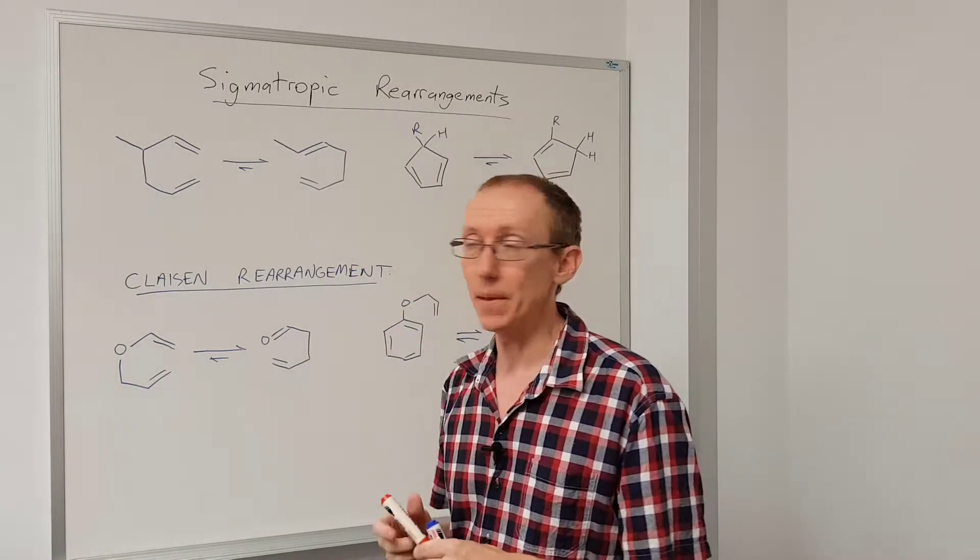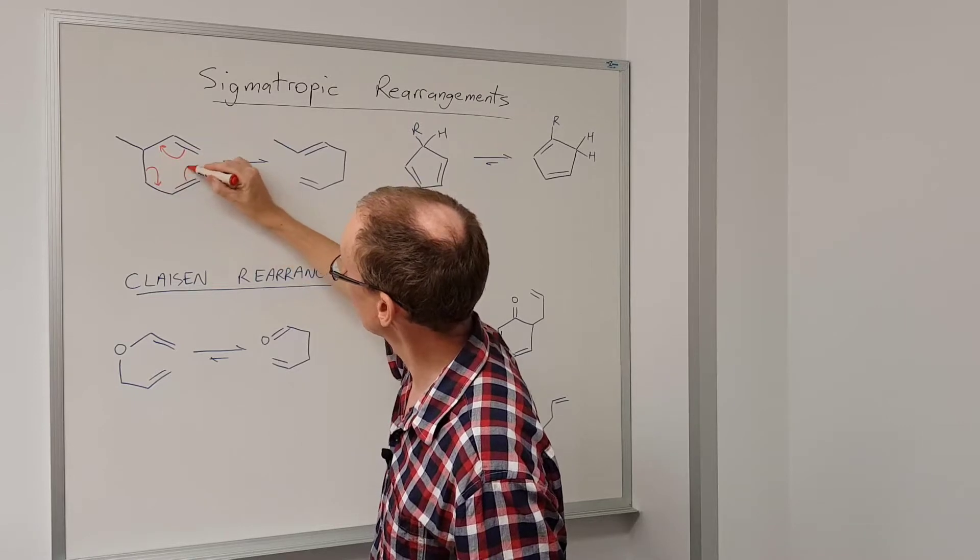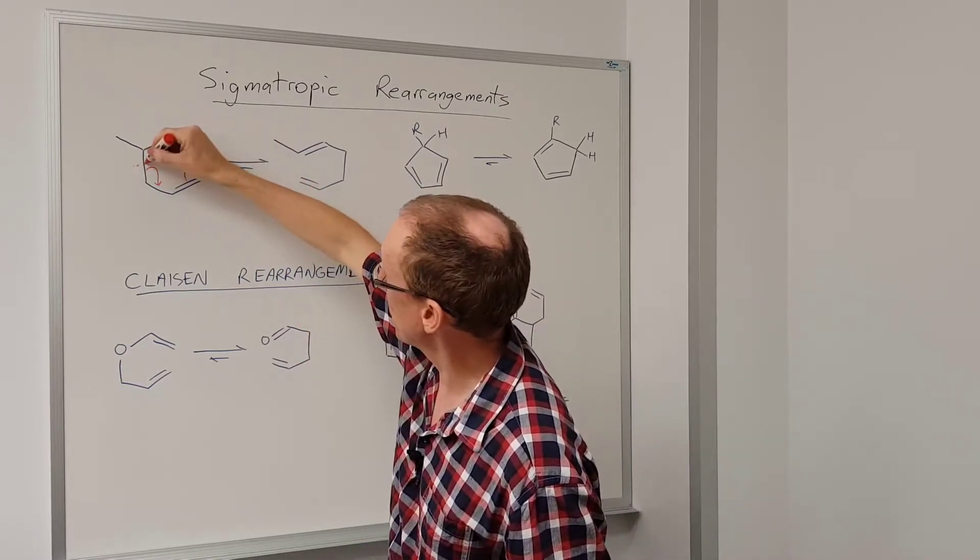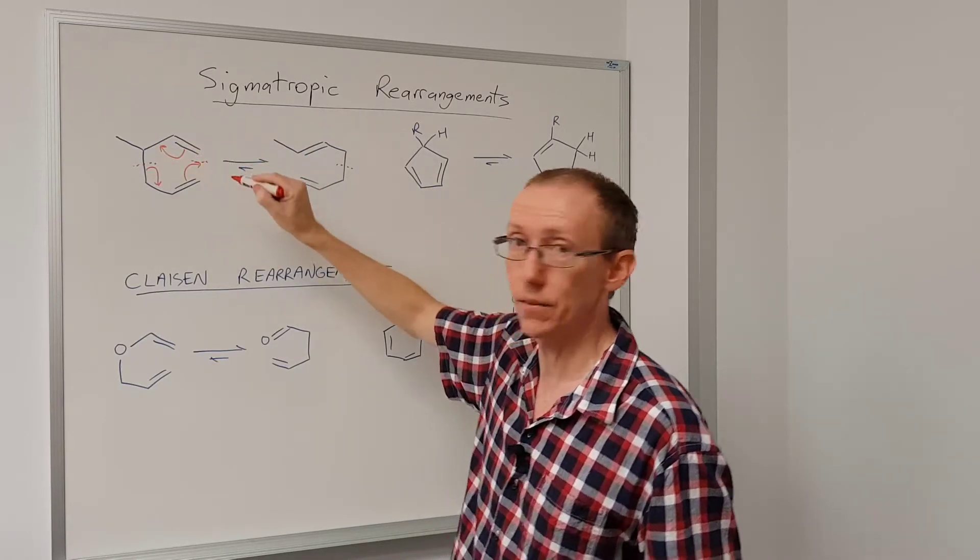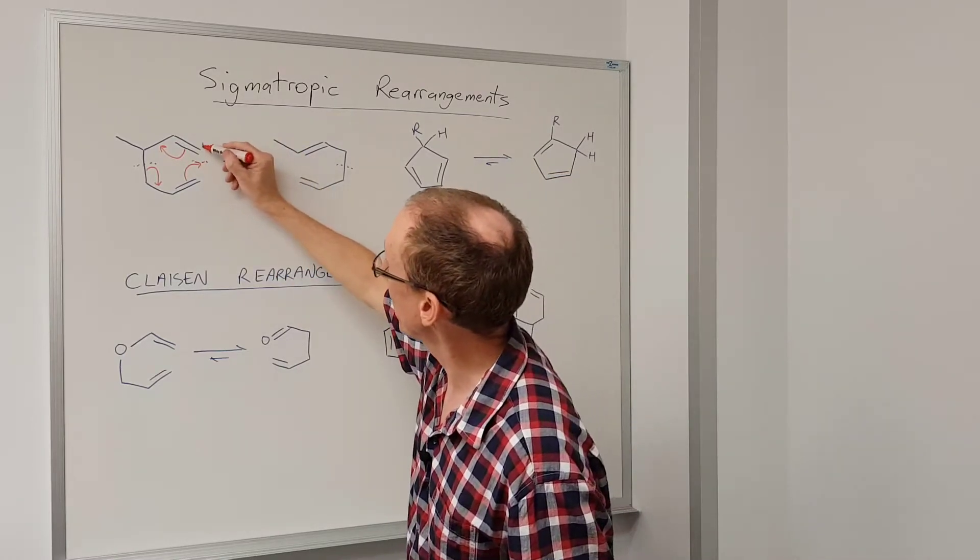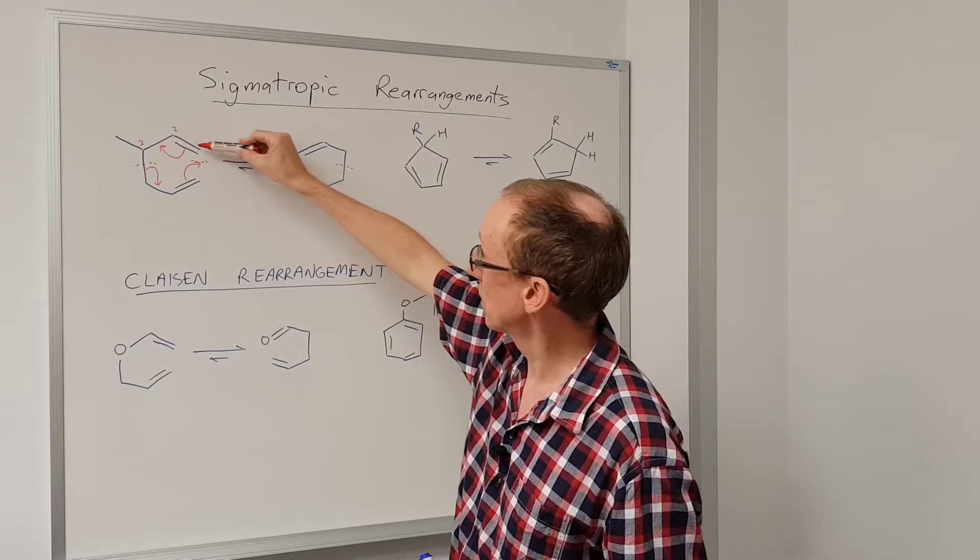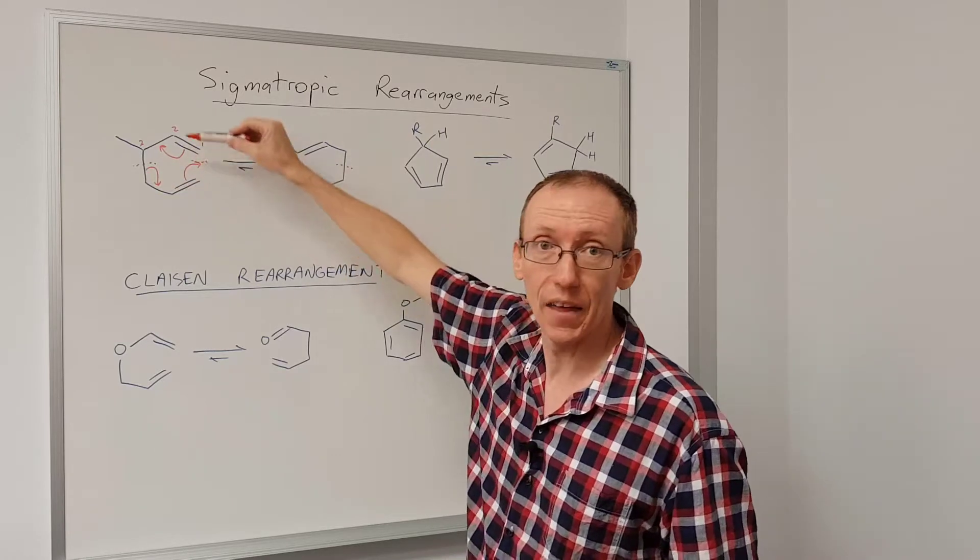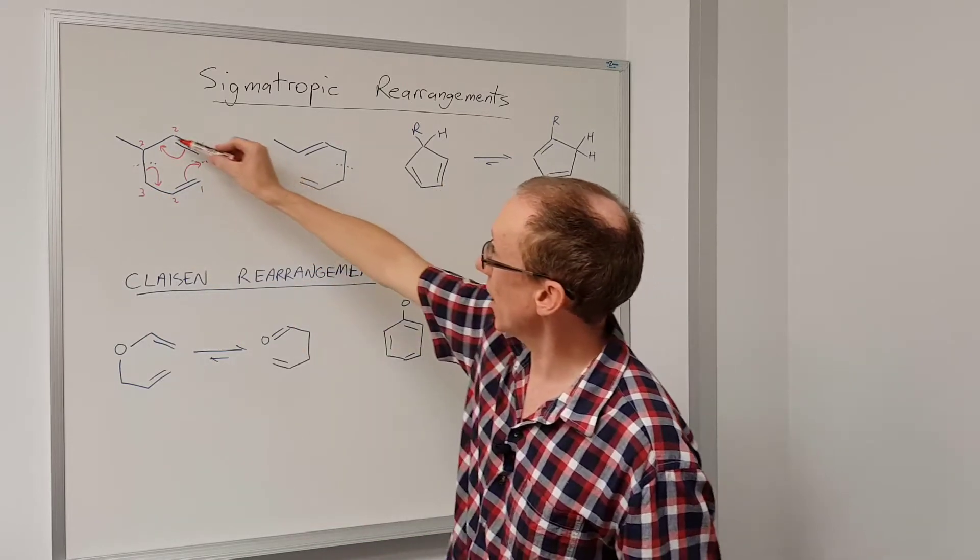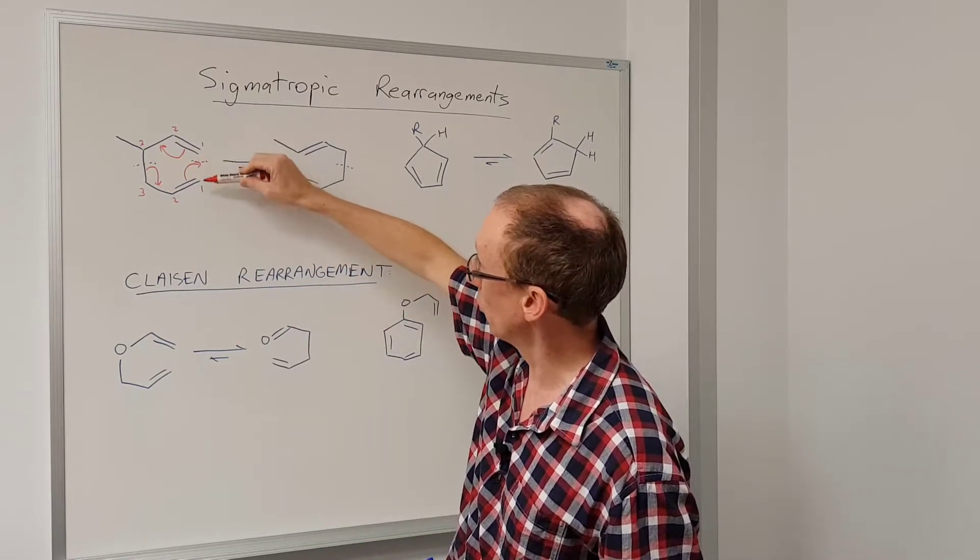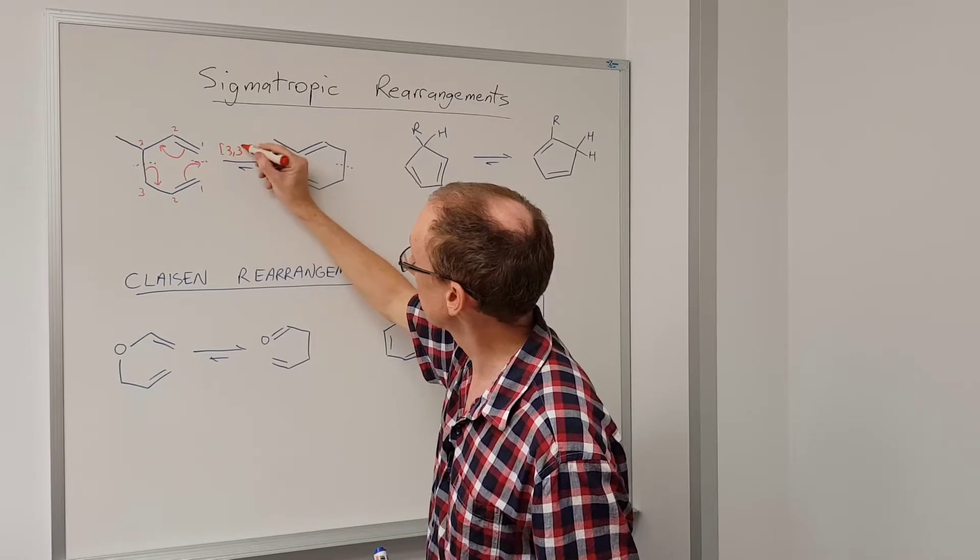But first, how do we name these reactions? If we follow the curly arrows from that through to the product, we can see that the bond is being broken here and it's being formed here, so there are two halves to the molecule. The first half, if we number that, we see there's three atoms in that contiguous set of atoms that make up the ring at the transition state, and similarly there's three atoms on this side. So there's three atoms on each side of the sigma bond that's being formed and the sigma bond that's broken, so we call that a 3,3 sigmatropic rearrangement.